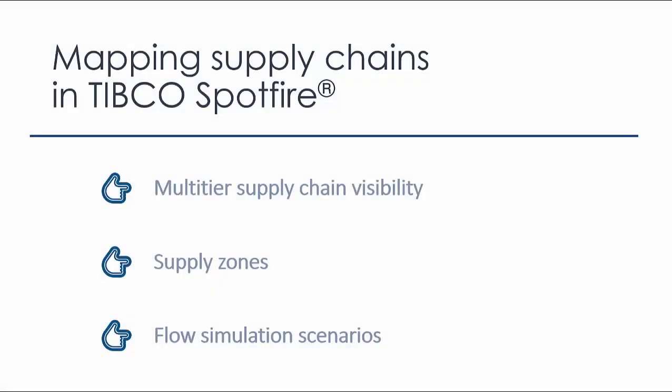First of all, when creating a visualization, we must keep in mind that our aim is to achieve clarity from complexity. Let me present you three supply chain solutions extending the map chart capabilities of Tipco Spotfire. First, a multitude of supply chain visibility example, where the aim is to geographically locate upstream and downstream elements of the supply chain and analyze relationships and risk factors.